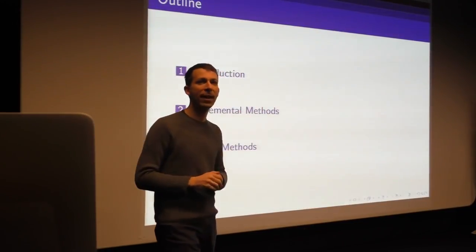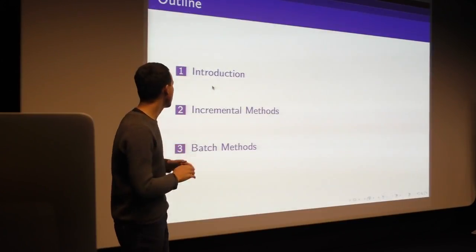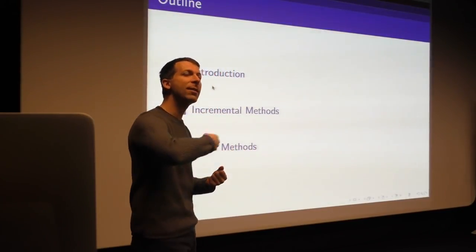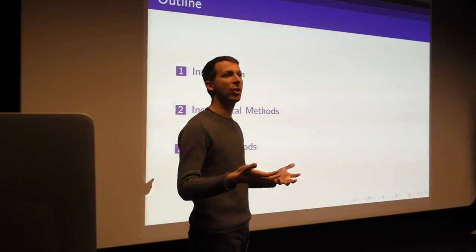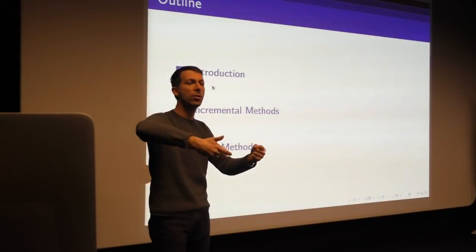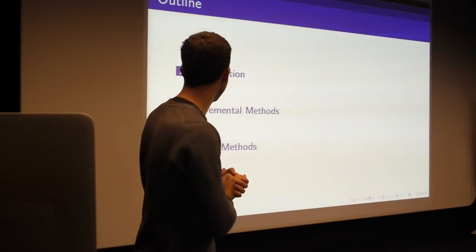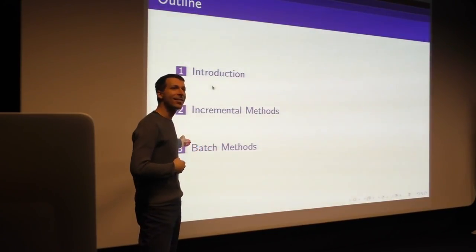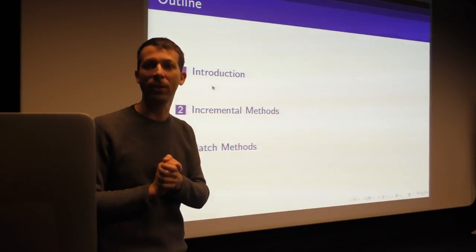The outline is fairly simple today. We'll start by understanding the basic space we're working in, then split into two approaches. First, incremental methods: you take a function approximator like a neural network and incrementally, every single step, update your value function online. Then we'll look at more data-efficient batch methods that consider the whole history and exactly fit your value function to everything seen so far.